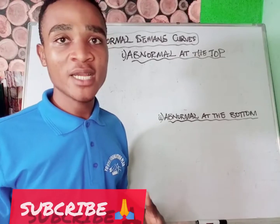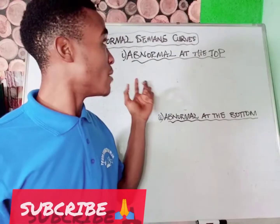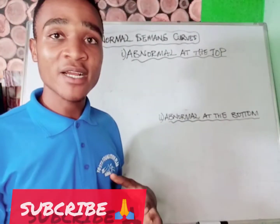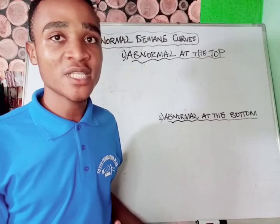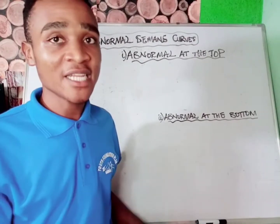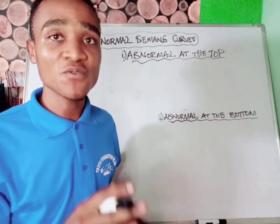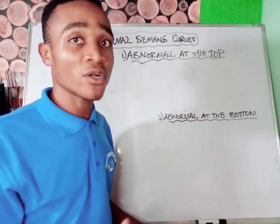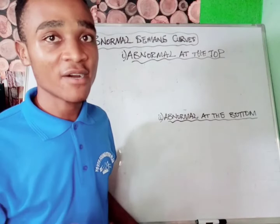Welcome once more to my channel. Today we are going to be looking at the abnormal demand curves. The abnormal demand curve is contrary or opposite to the law of demand, which states that more of a good is demanded at a higher price than at a lower price — that's ceteris paribus, if everything remains equal. In today's lesson we are going to be looking at a situation where everything is not equal.